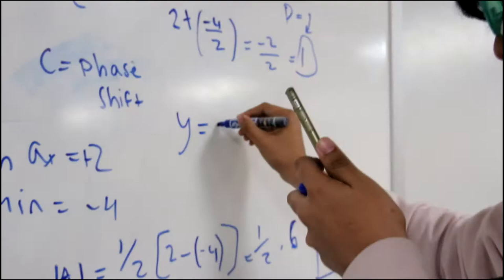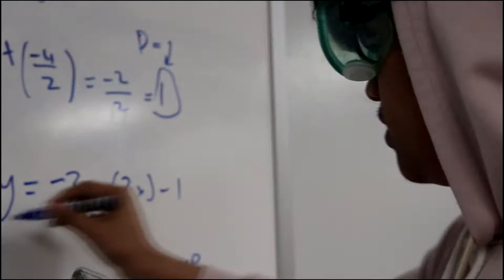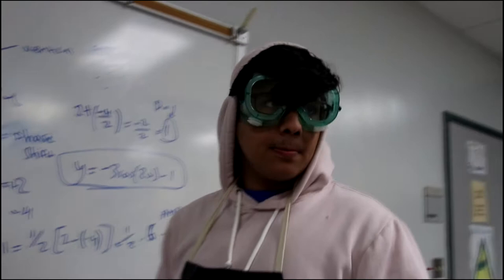But if I were to write this equation, y is equal to negative 3 cos 2x minus 1. Okay, I don't know what to do after that.